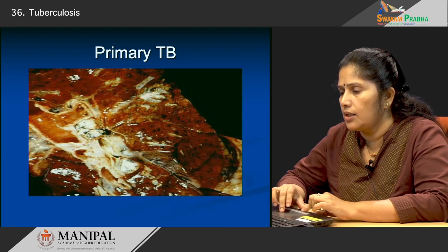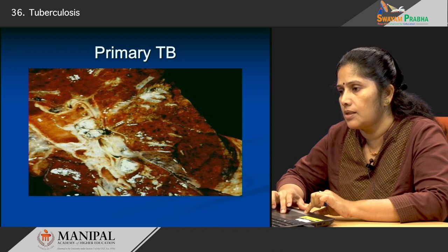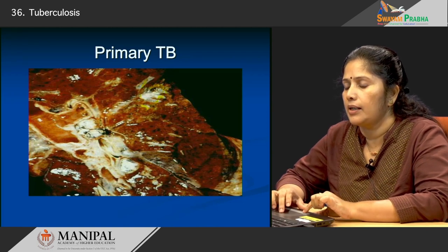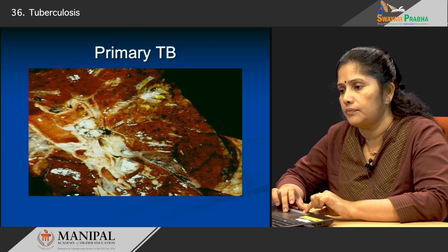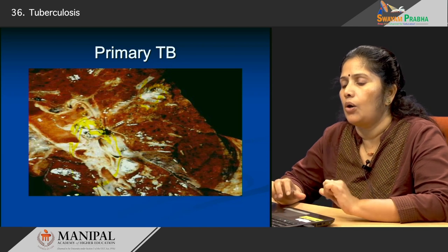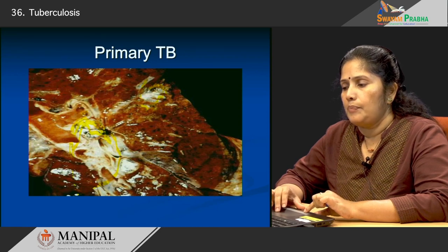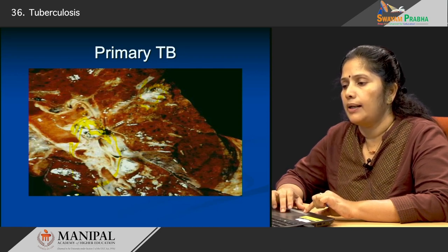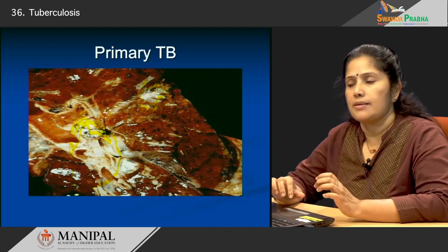If you look at this picture, you can see a small sub-pleural lesion in this area, accompanied by the hilar lymph node. This combination — a lesion in the lung parenchyma which is sub-pleural and small, accompanied by a large hilar lesion — is known as the Ghon's complex.